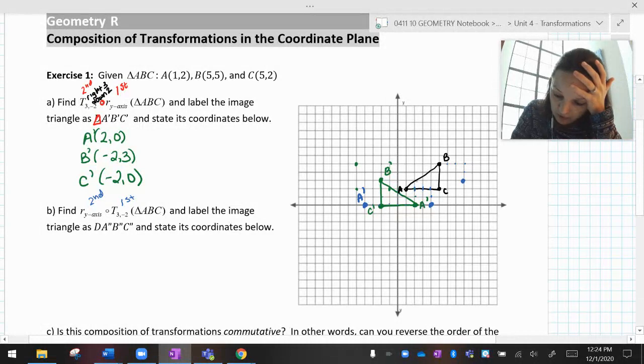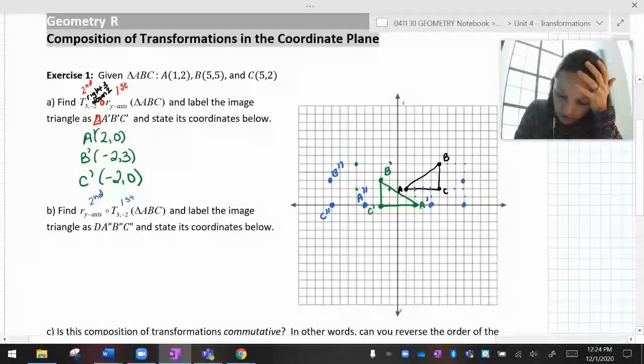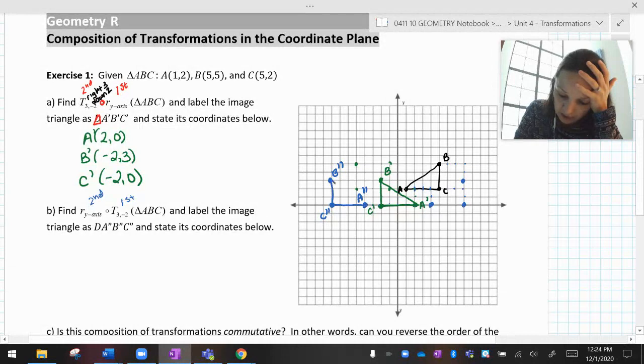A prime ends up here. Oh, it's definitely not in the same place. Okay. Now let's try B. So right three, down two, and then flip over the y-axis. There's B prime. And then C, right three, down two. That's going to be eight to here and eight to there. And they told us to call that A double prime, B double prime, and C double prime.